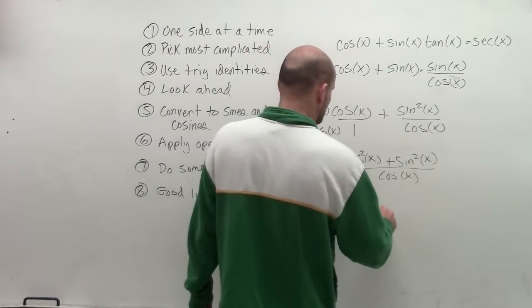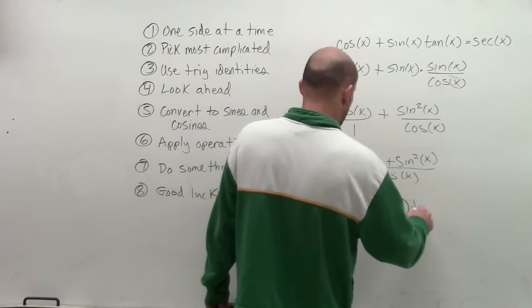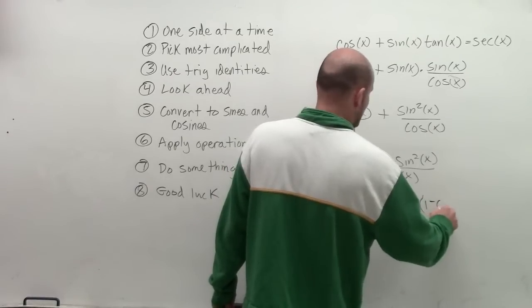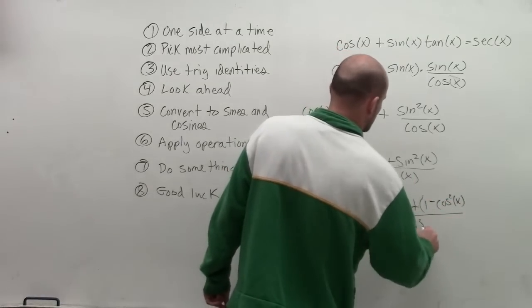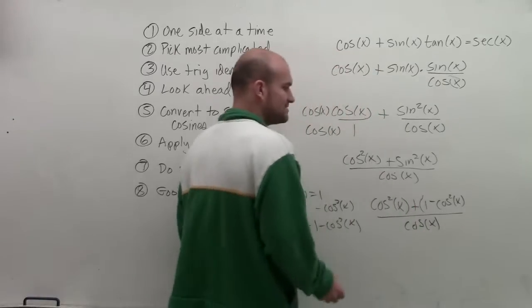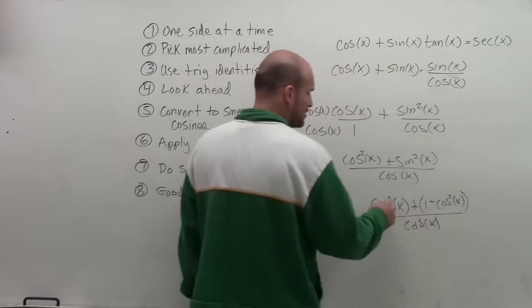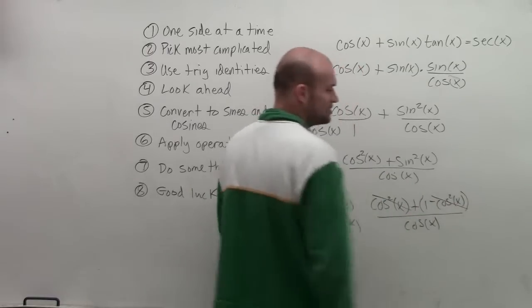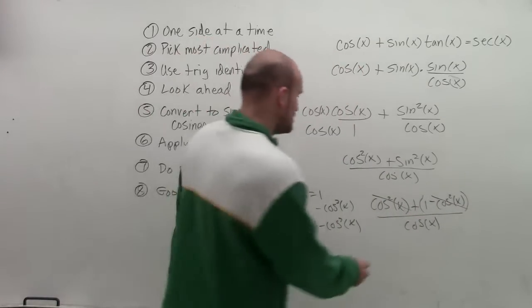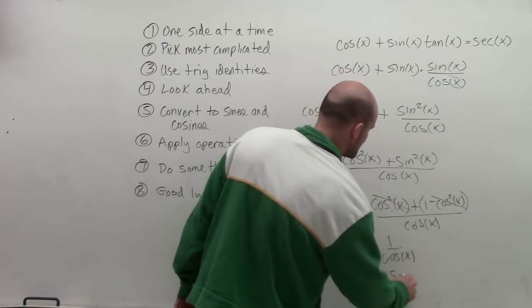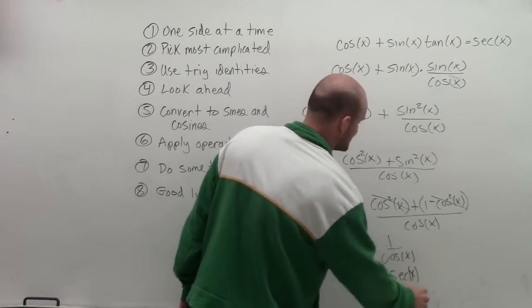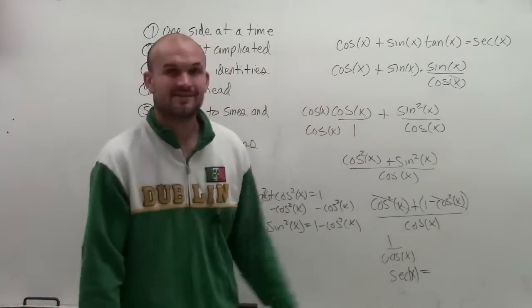So now I'm going to have cosine squared of x plus 1 minus cosine squared of x all over cosine of x. Well, in this form, you notice that my cosine squared of x is going to subtract cosine squared of x, leaving me with 0. Just leave me with 1 over cosine of x, which we know is, by using my reciprocal identity, is equal to secant of x.